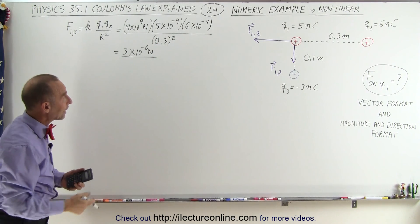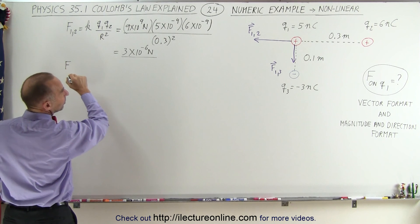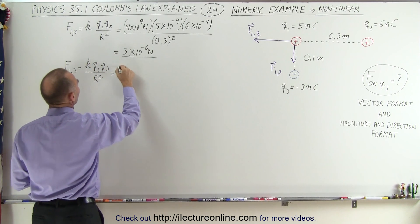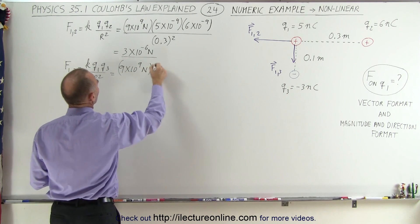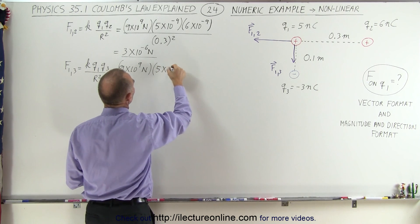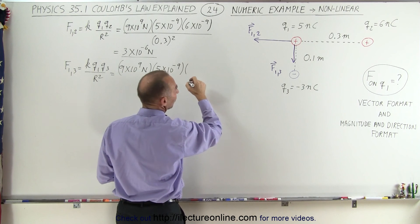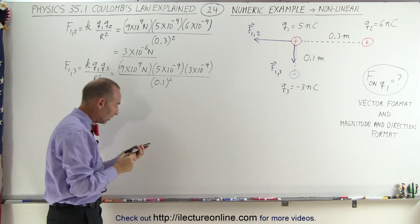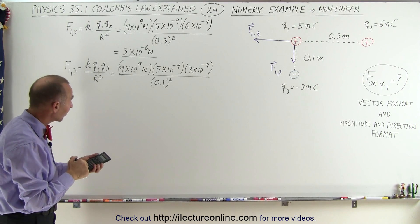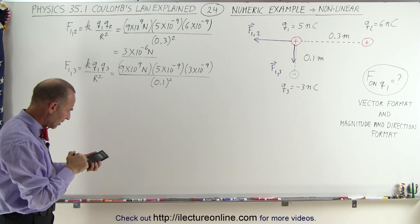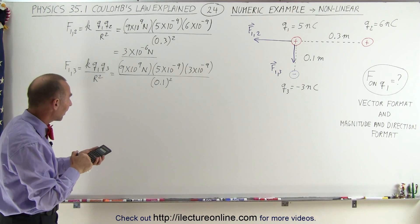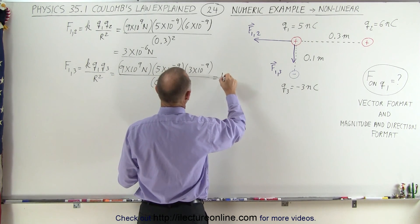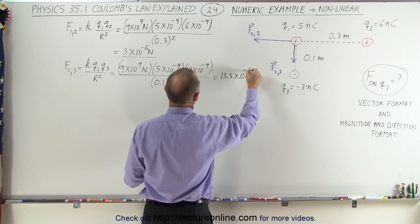Now we find the force between 1 and 3. This is equal to K times Q1 times Q3, divided by the distance between them squared. So that's 9 times 10 to the 9th, times Q1 which is 5 times 10 to the minus 9, times Q3 which is 3 times 10 to the minus 9, divided by 0.1 squared because they're much closer together. Again, we don't care about the negative signs because we're just finding magnitudes. That gives us 13.5 times 10 to the minus 6 newtons.